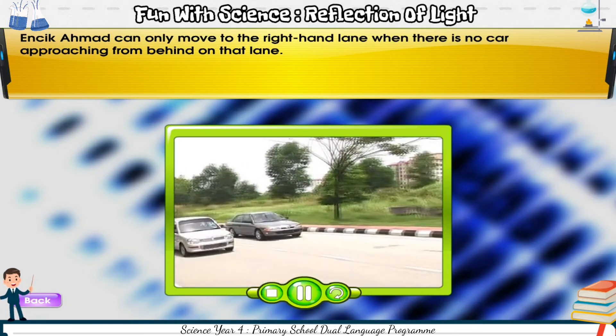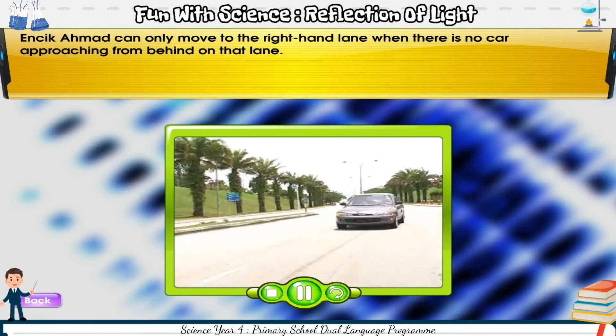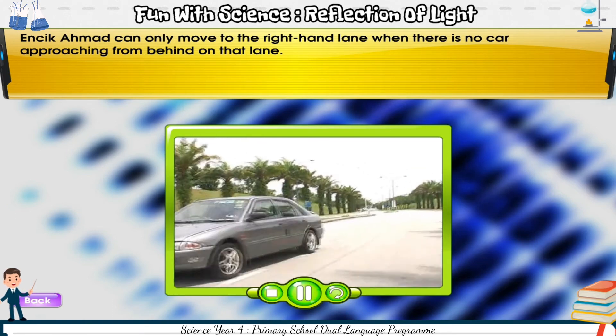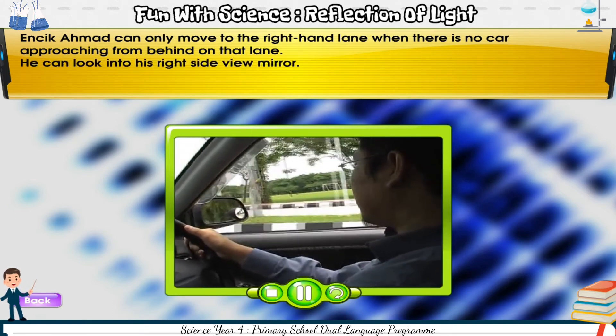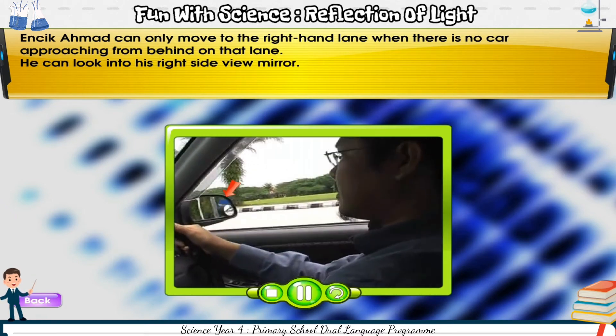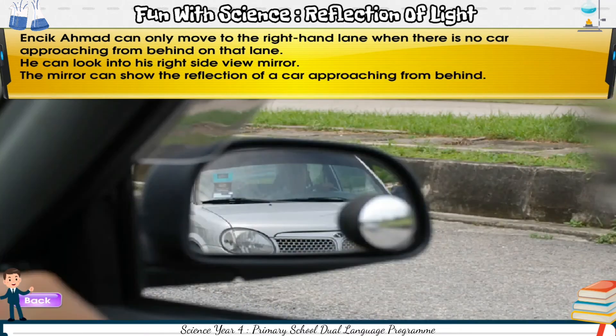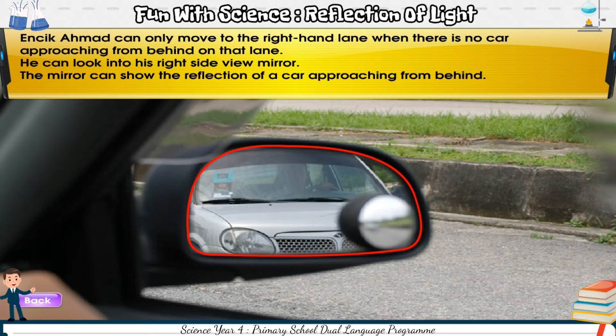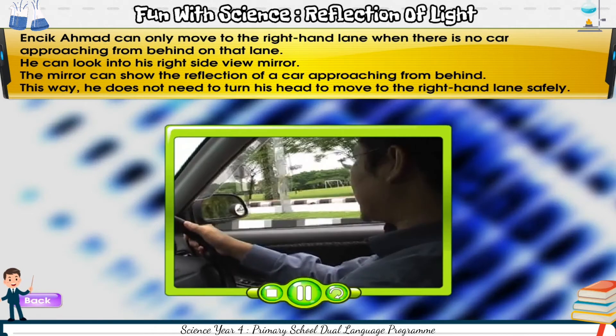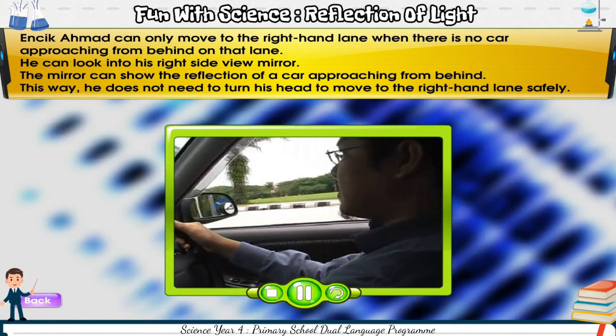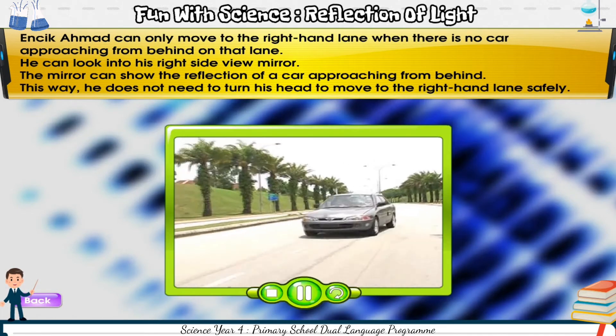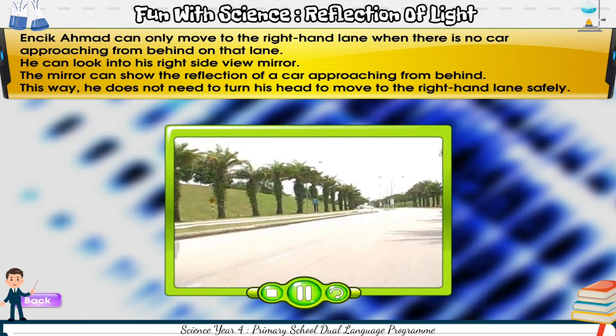Incik Ahmad can only move to the right-hand lane when there is no car approaching from behind on that lane. He can look into his right-side view mirror. The mirror can show the reflection of a car approaching from behind. This way, he does not need to turn his head to move to the right-hand lane safely.